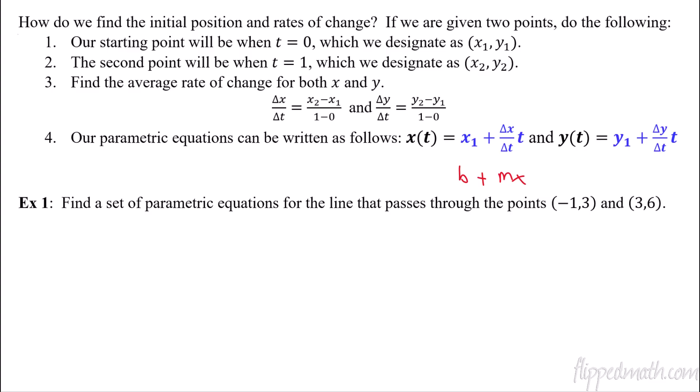All right, so let's try this out. Find the set of parametric equations for the line that passes through the points (-1,3) and (3,6). Now, parametric equations have direction. This does not tell us which direction we're going. Are we starting at (-1,3) and going to (3,6), or are we starting at (3,6) and going backwards to (-1,3)? Well, since the problem doesn't say, then we can just choose. I'm going to say this is our initial point here. I'm going to say that when t equals 0, we're at the coordinate point (-1,3). And then I will say when t equals 1, we're at the point (3,6).